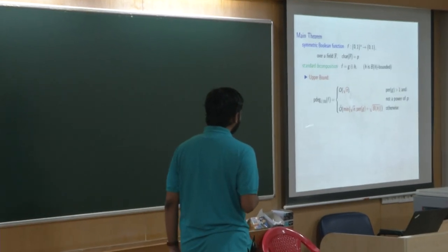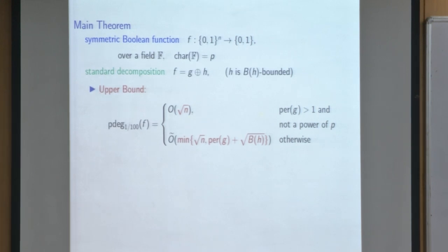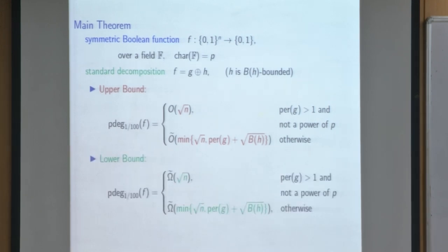The upper bounds are: if the period of g is not a power of p (including characteristic 0), the upper bound is O(√n). If it is a power of p, the bound is O(min(√n, period(g) + √b(h))). The Allman-Williams bound of O(√n) already applies to all symmetric Boolean functions, so the improvement applies when the period is a power of p and we can exploit the finite characteristic. The lower bounds match up to polylog factors: if the period is not a power of p, the lower bound is Ω̃(√n); otherwise, the matching expression holds.